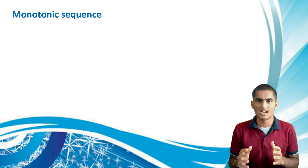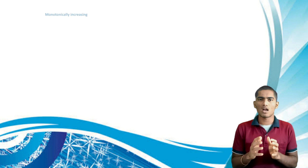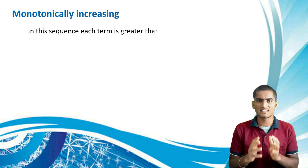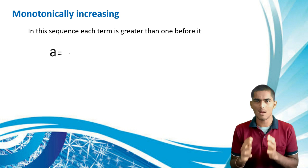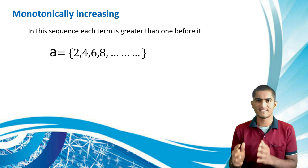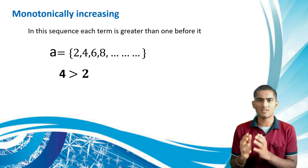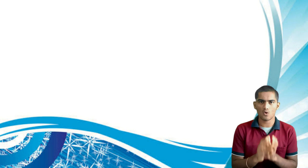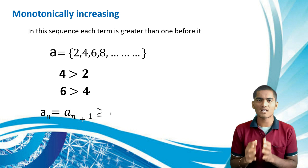Next is monotonic sequence, which has two types. The first is monotonically increasing: each term is greater than or equal to the one before it. For example, the sequence of even numbers 2, 4, 6, 8: the second term 4 is greater than 2, and the third term 6 is greater than 4. The general form is a_(n+1) ≥ a_n.